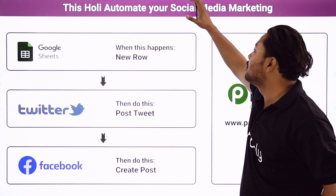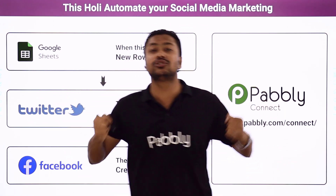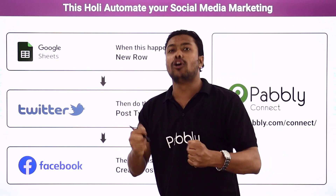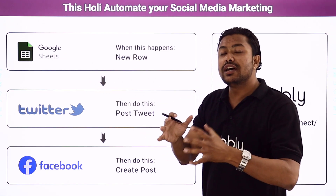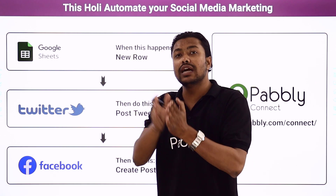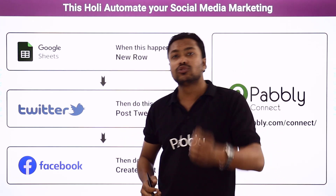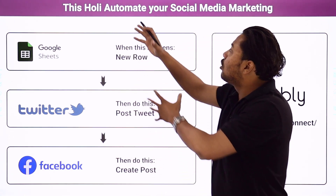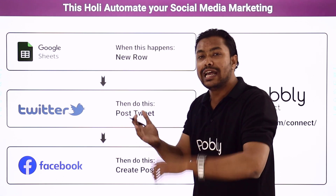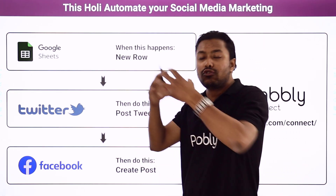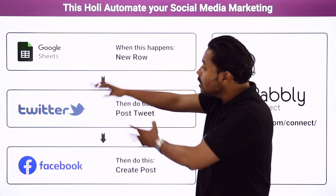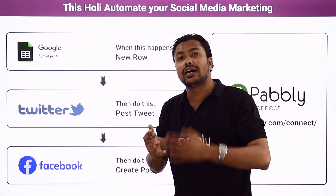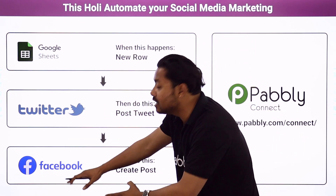This Holi, we are going to automate your social media marketing. What we are going to do is make a Google Sheet with several different posts and schedule them on different dates, so that whenever there is a new festival — Halloween, New Year, Diwali, etc. — the automation will activate on that specific date and send warm wishes to your Twitter and Facebook accounts. I am just using Twitter and Facebook as examples in this automation.